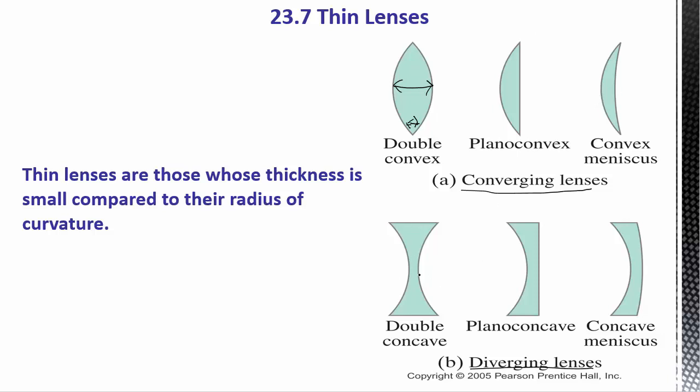Here this one's obviously diverging. This one's a little more complicated because you've got concave here, convex there, but it's fatter on the ends here than it is in the middle. So this will be a diverging lens.